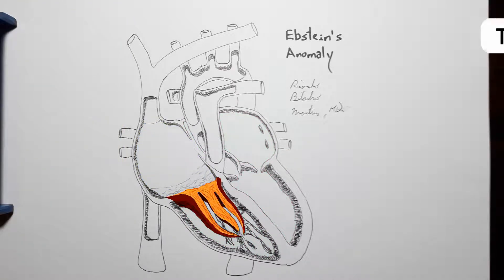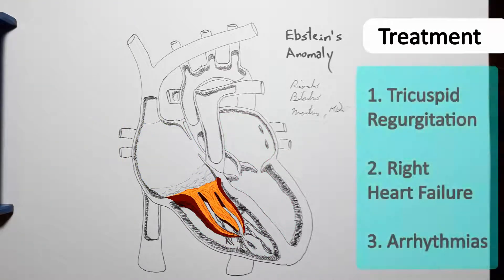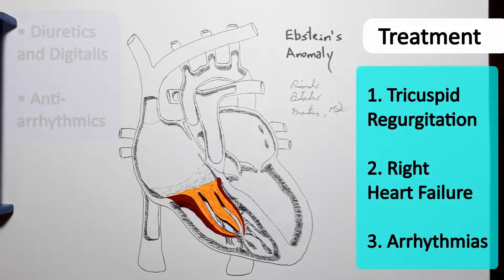Treatment for Ebstein anomaly will include pharmacotherapy for heart failure, as well as anti-arrhythmic drugs. Radiofrequency ablation of the accessory pathways is also a procedure likely to be necessary to prevent the occurrence of fatal arrhythmias.